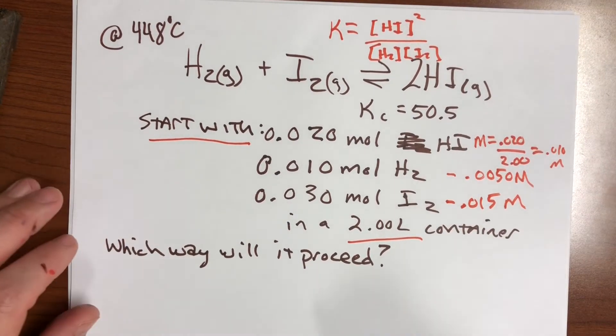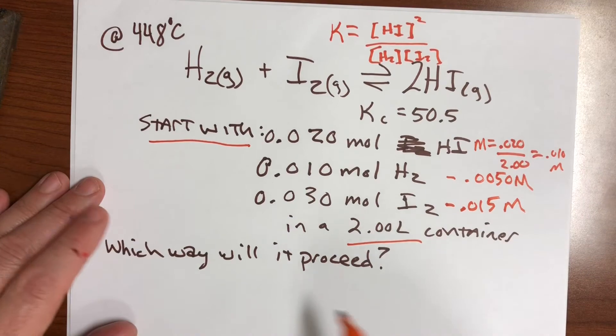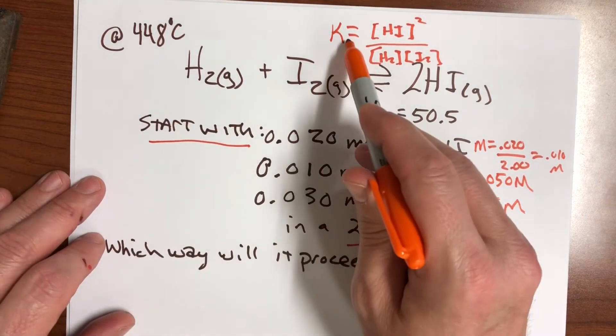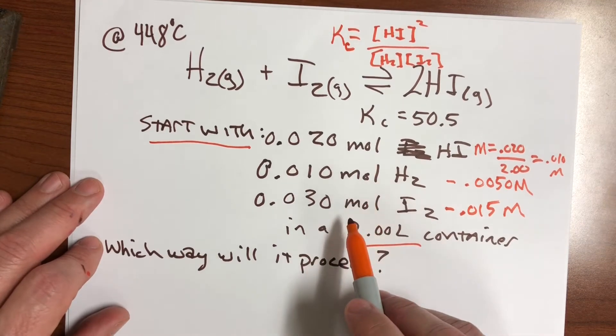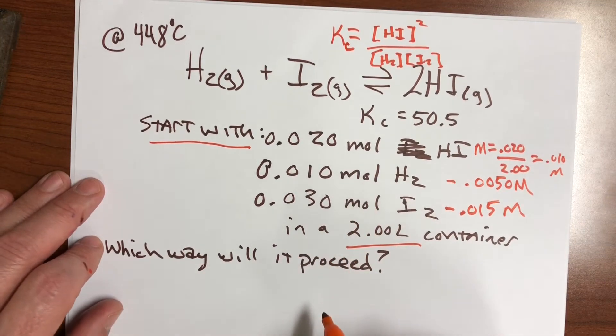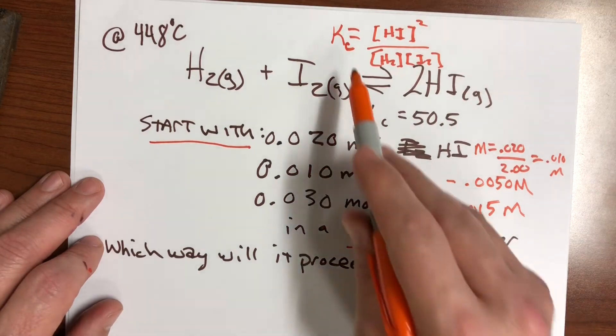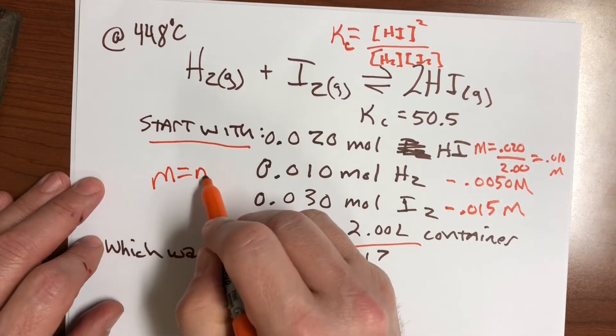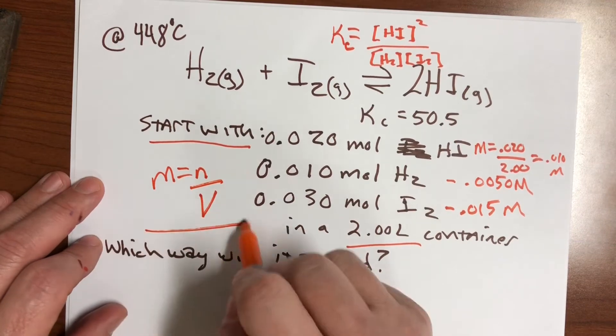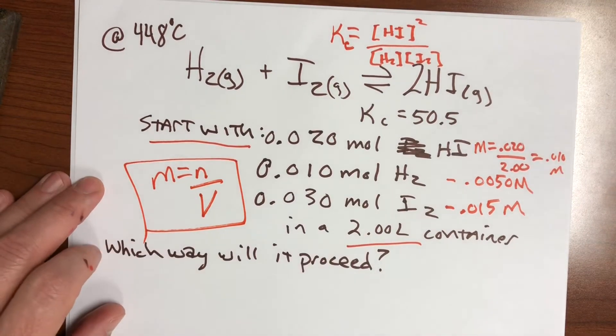So you've got to be really careful when you're plugging these things in that you're using molarities. If it's a Kc, they'll often give you grams or moles, hoping that you can remember that you've got to convert it into molarity. Remember that molarity is moles divided by liters. The volume has to be in liters for molarity.